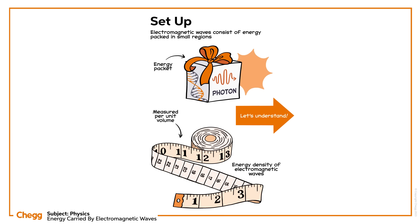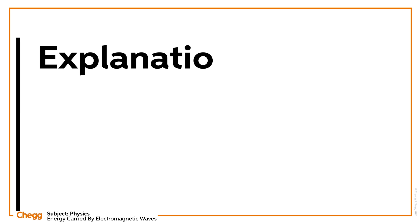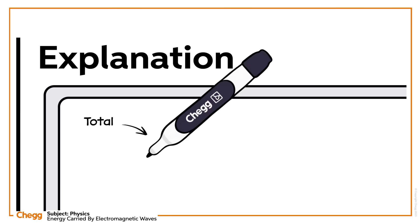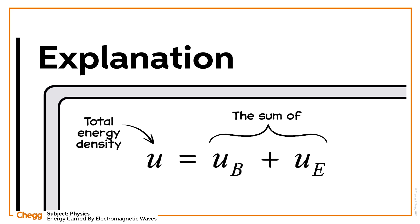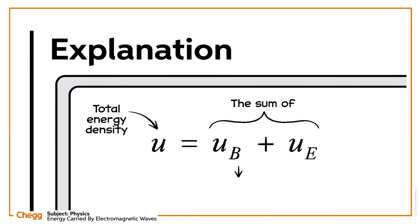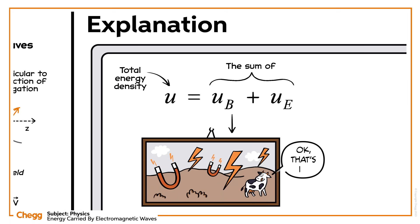So let's understand the energy density and energy of electromagnetic waves. The total energy density U of the electromagnetic wave is the sum of the magnetic field energy density UB and electric field energy density UE.